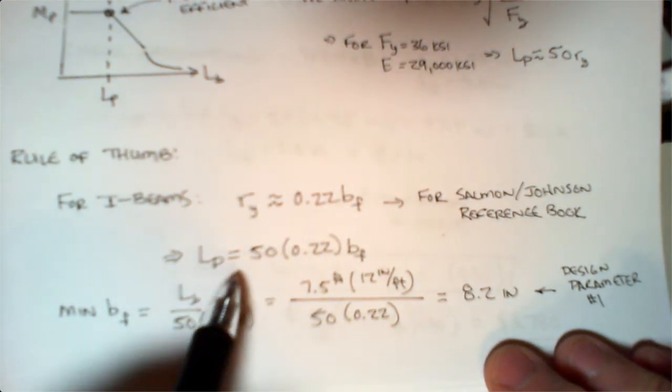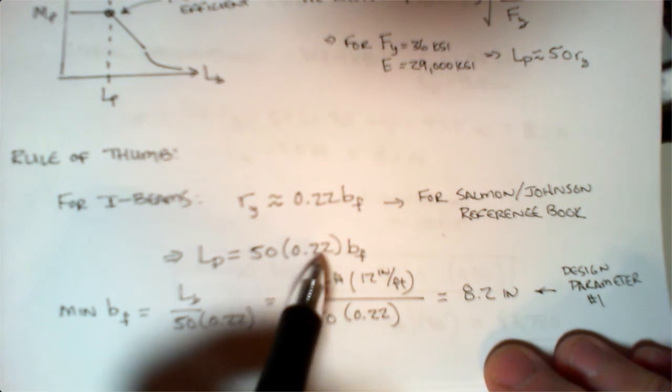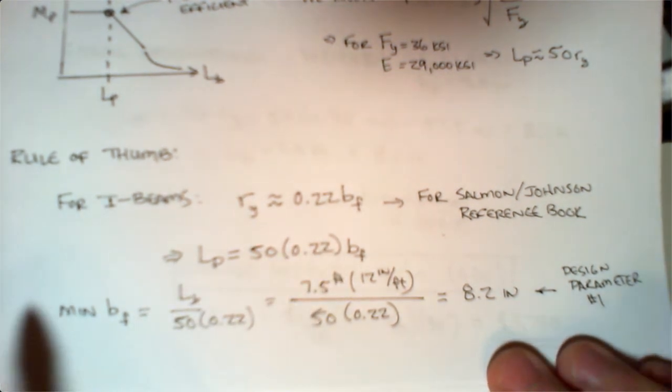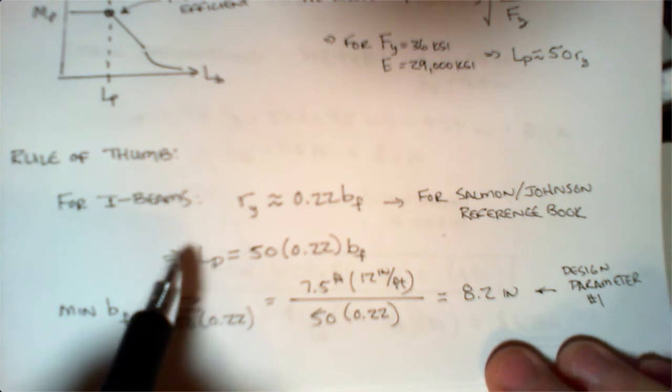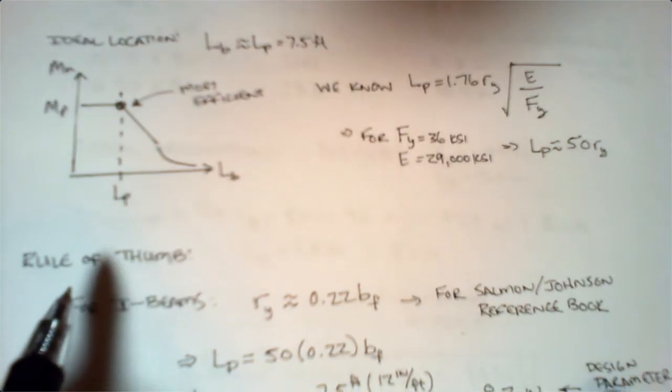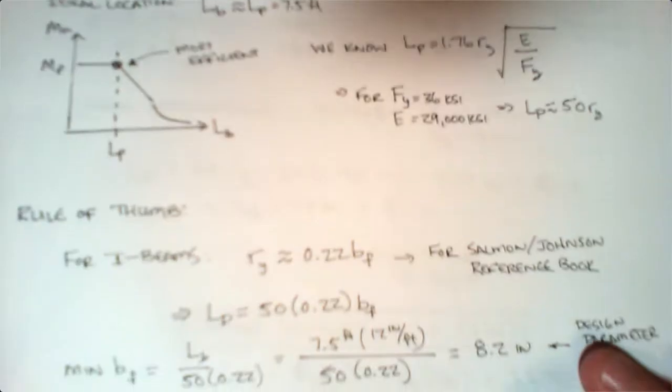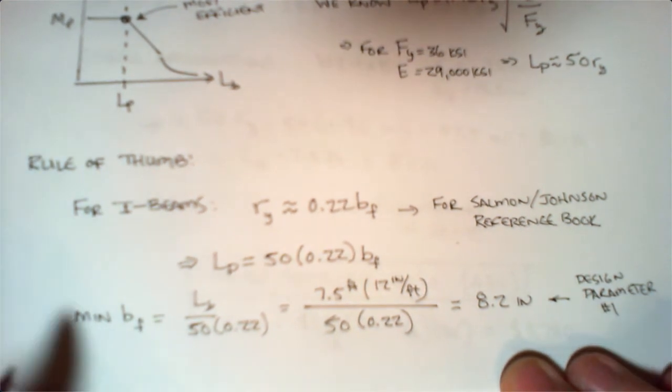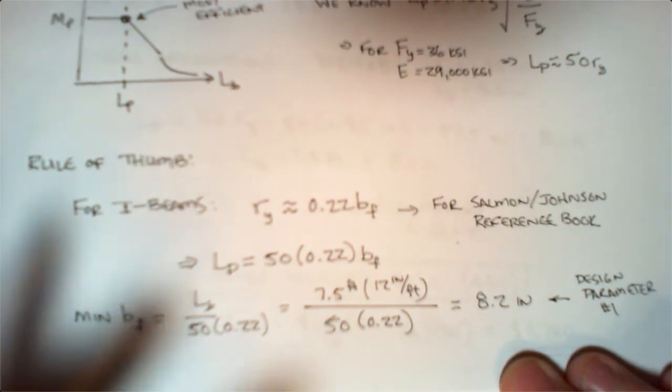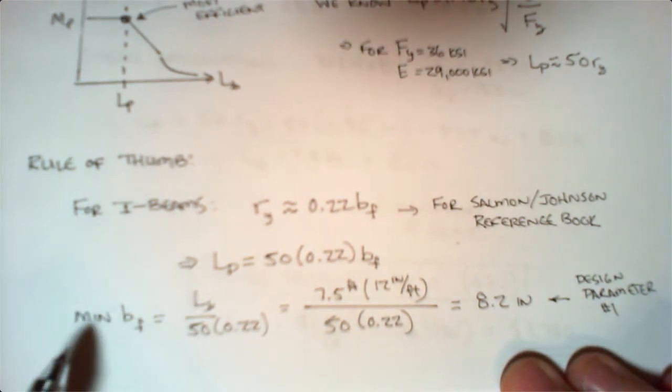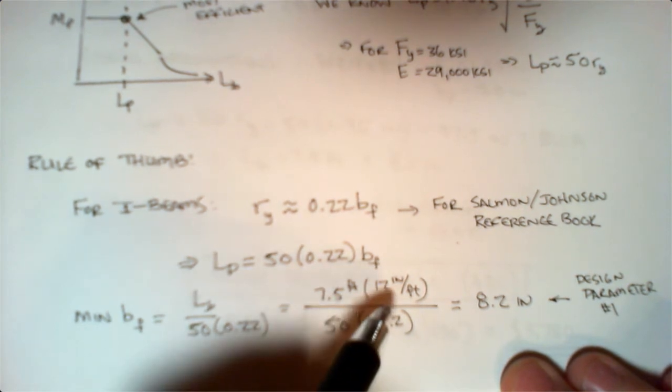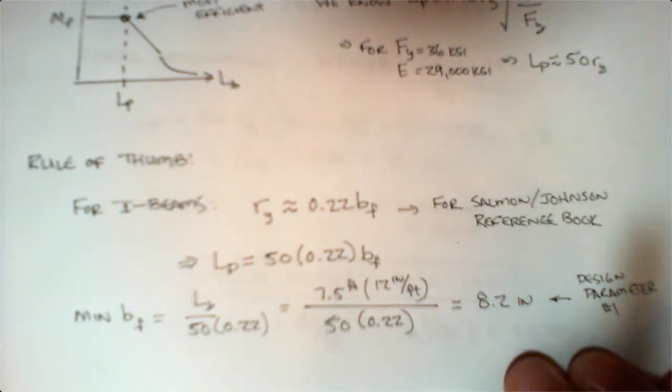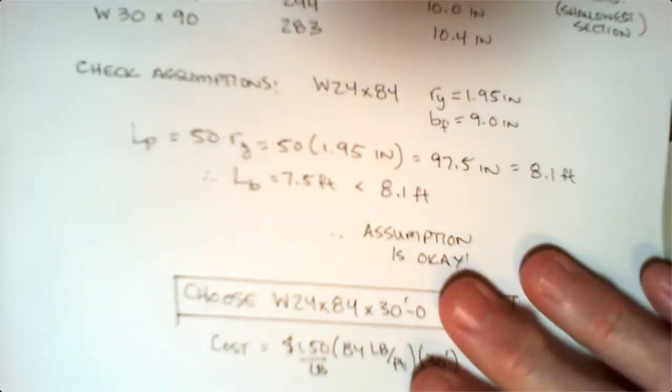If I calculate Lp using this equation, it's 50 times 0.22 times bf. I can take this Lp here and compare it back to the Lp that's here, and I can work my way into a minimum bf dimension. That's the flange width. If I do that and go through—make sure you watch your units—I end up with 8.2 inches.